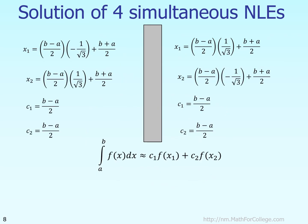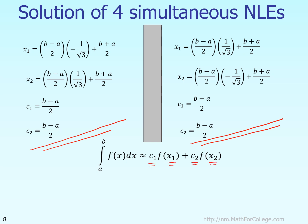The four simultaneous non-linear equations yield two acceptable solutions. However, these two solutions are actually the same, because x1 and x2 are interchangeable, and C1 and C2 are both equal to (B − A)/2. So we effectively have one unique solution: specific values for C1, x1, C2, and x2.